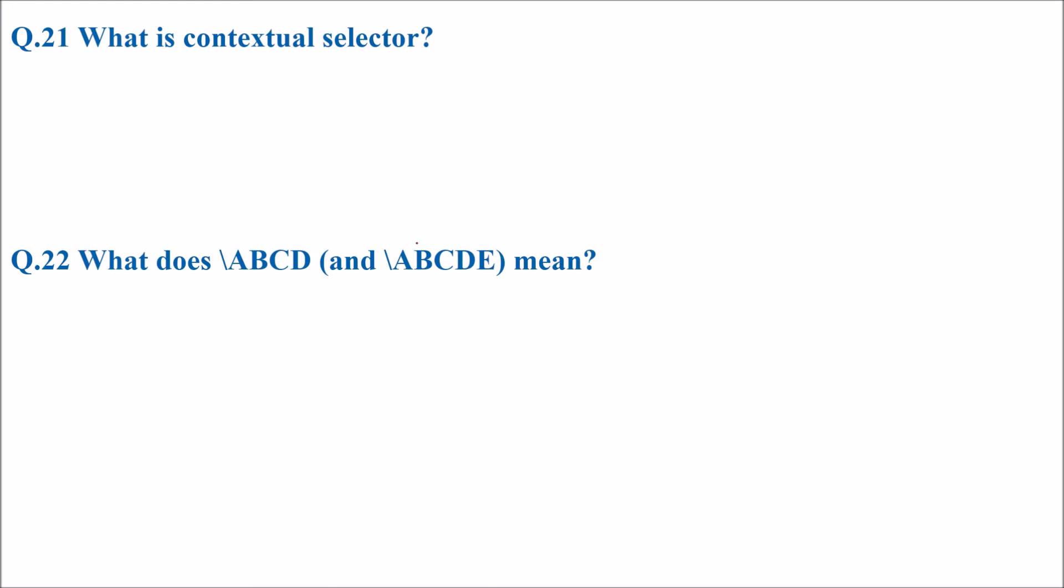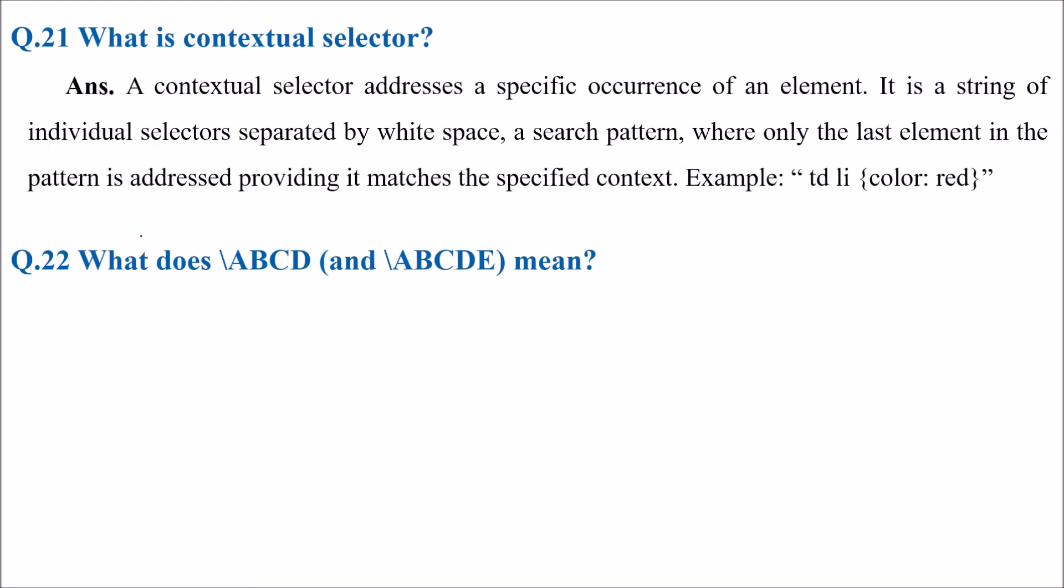What is contextual selector? This addresses a specific occurrence of an element. It is a string of individual selectors separated by white space, a search pattern where only the last element in the pattern is addressed providing it matches the specific context.